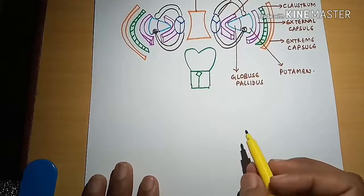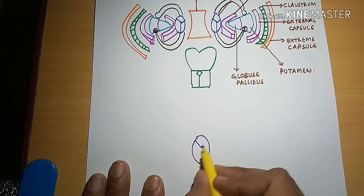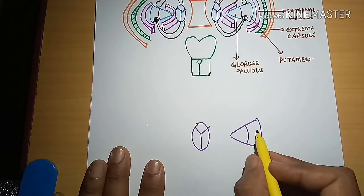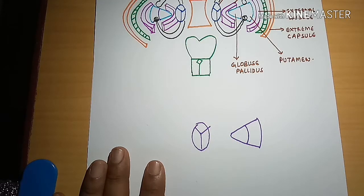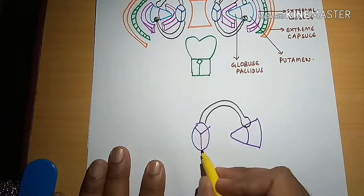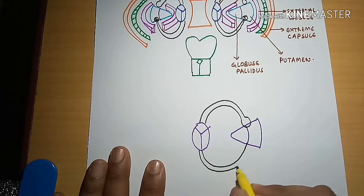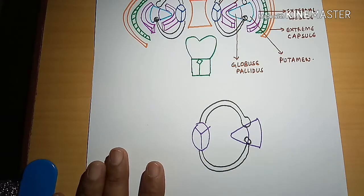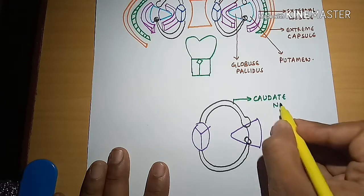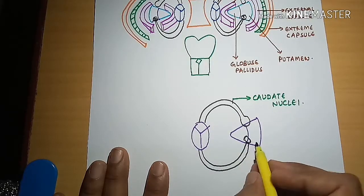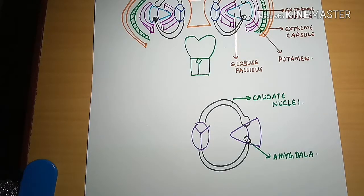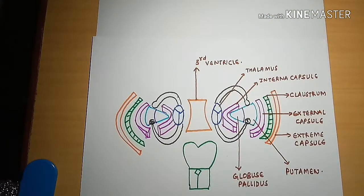To clearly illustrate the caudate nucleus: this is the thalamus, and this is the lentiform cell, which has medially the globus pallidus and laterally the putamen. The C-shaped caudate nucleus is present here, joining the lentiform cell to the thalamus. This nucleus has a tail, and at the tail a large mass of gray matter is present. This nucleus is called the caudate nucleus, and at its tail this portion is called the amygdala.